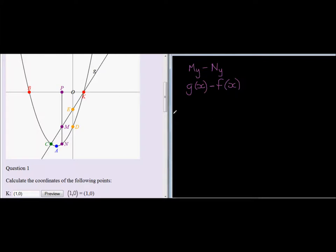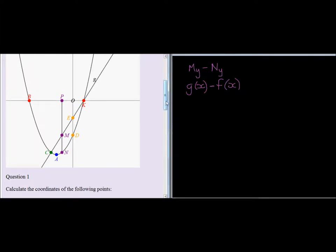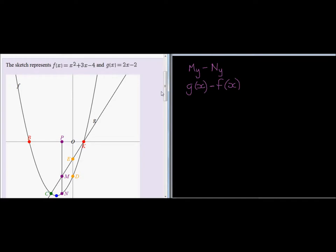Now with that in mind, the function formula for G - just going to get it - it's 2x minus 2, minus x squared plus 3x minus 4.